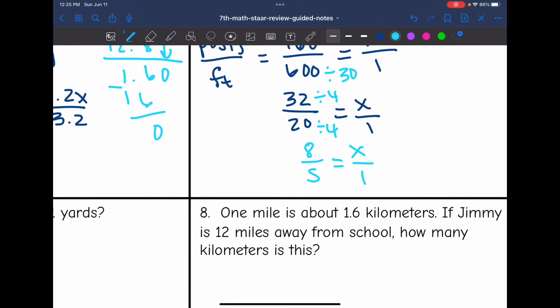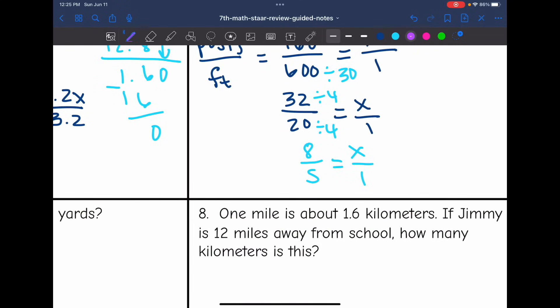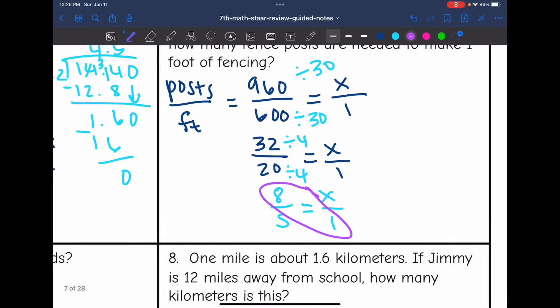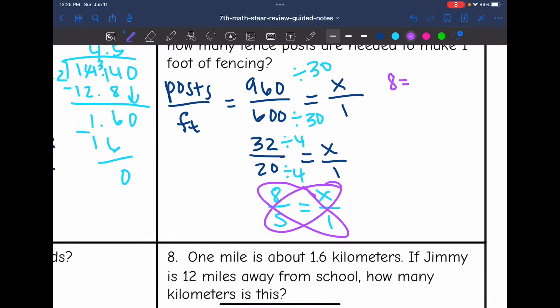And now I can solve this with cross multiplication. And it'll be easier since I have smaller numbers. So 8 times 1 is 8. And then x times 5 is 5. So I need to do 8 divided by 5 to figure out how many fence posts it takes to make one foot of fencing. So it'll take 1.6 fence posts for one foot of fencing.